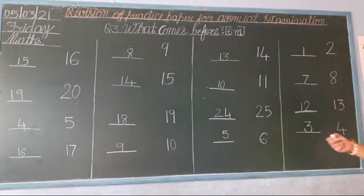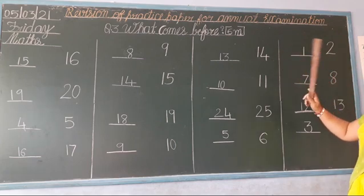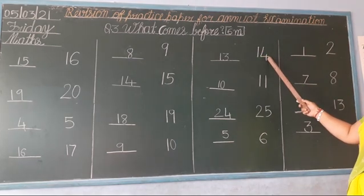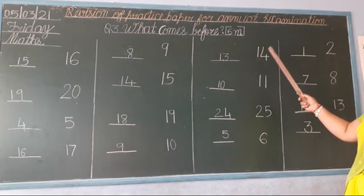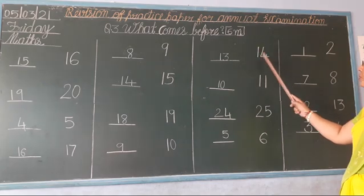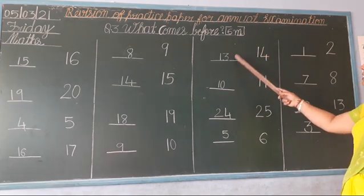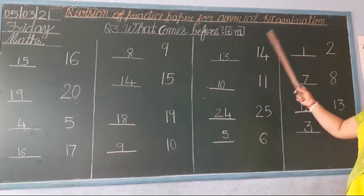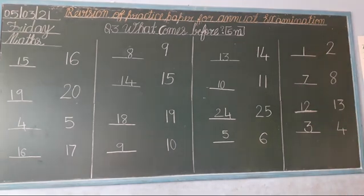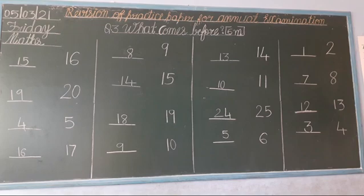Okay? Clear? How to do this? First you read this number. After, you speak the numbers up to the given number, then stop. And the number that comes just before — that is what you have to write. Okay? Clear? So now children, thank you. Do practice at your home. Take care. Bye. Have a nice day. Thank you very much.